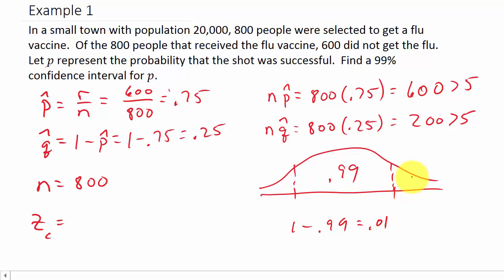The 0.01 is the area of this and this added together. So if we do 0.01 over 2, that is 0.005. So this is 0.005 and this is 0.005.